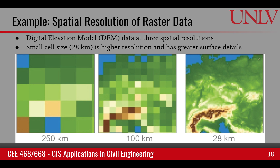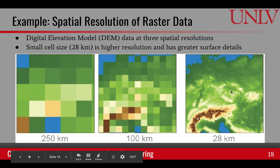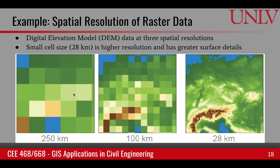Here is an example of spatial resolution using a digital elevation model, or DEM, at three spatial resolutions. Each cell on one end represents a 28 kilometer by 28 kilometer square on the surface, whereas on the other end it is 250 kilometers by 250 kilometers. You can see that as the resolution becomes coarser, the details of the surface also become less and less visible.